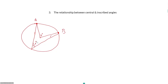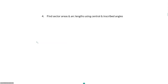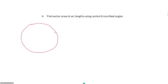How do we use our central and inscribed angles? We use them to find sector areas and arc lengths. The important angle is the central angle — that is going to determine your sector area and your arc length.